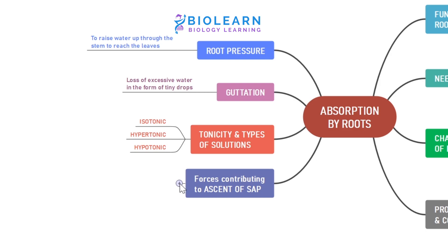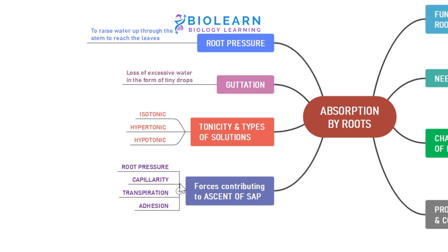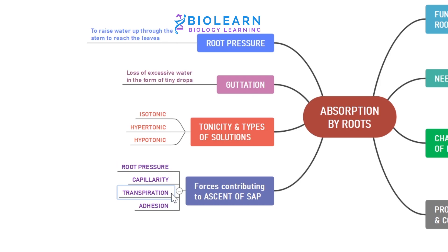The forces contributing to the ascent of sap — that is, the upward movement of fluids in plants — are root pressure, capillarity or narrow diameter of xylem vessels, transpiration that generates pull for water molecules, and adhesion of water molecules with the surface of cells.